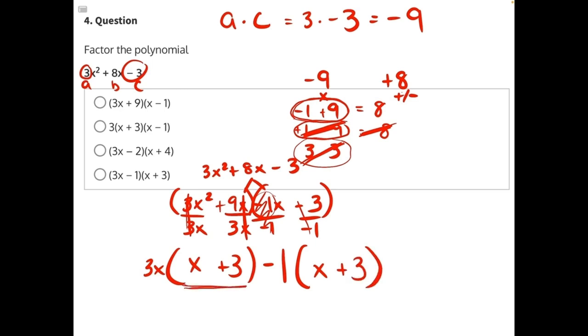...so we can rewrite this expression one more time as 3x minus 1, taking both of the factors we pulled out and putting them together, times x plus 3, the factors in the parentheses that were identical. And that is the fully factored form of this polynomial, making D the correct answer.